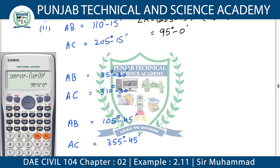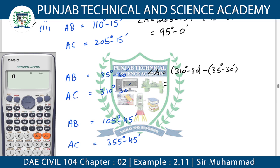Now let us look at the third point similarly. The third question — the first two questions are done. In the third question, line A-B and line A-C: you can see we need to find angle A. The bearing of line AC is 310 degrees 30 minutes. From this we subtract 35 degrees 30 minutes. So the bearing we get is 270 degrees and 0 minutes.